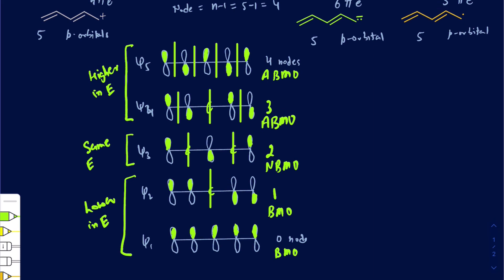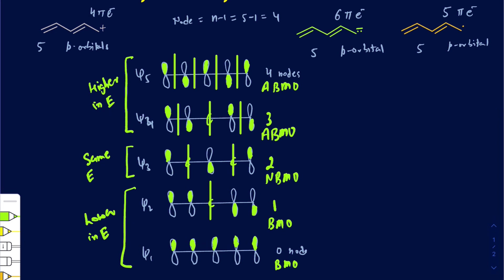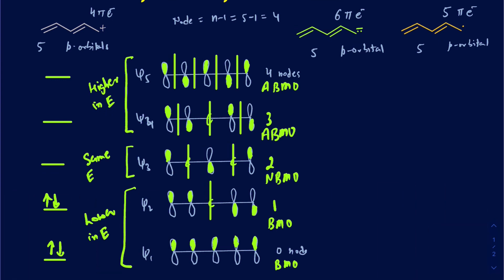Now let's go ahead and fill in electrons, starting with the cation. For the cation, I have four pi electrons. Filling two electrons into ψ1 and two electrons into ψ2, that's the end of the story. ψ2 was the last orbital that had electrons, so that would be your HOMO — highest occupied molecular orbital — and the one right next to that would be your LUMO, the lowest unoccupied molecular orbital.